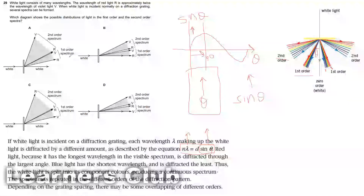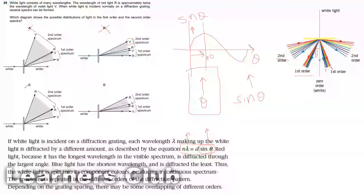Looking at the options: in one diagram, violet stays above red — so that's not the answer. Another diagram shows the same case — not the answer either. In another, red is on top — so this could be the answer. Or another option also has red on top — so this could also be the answer.